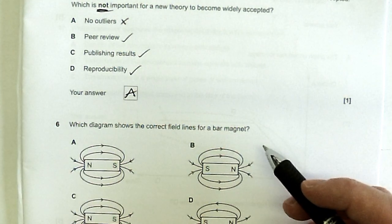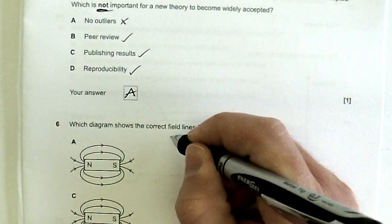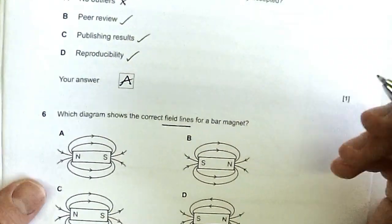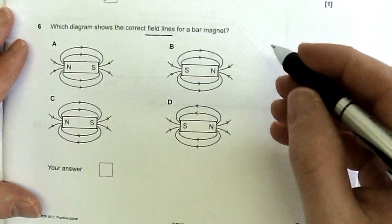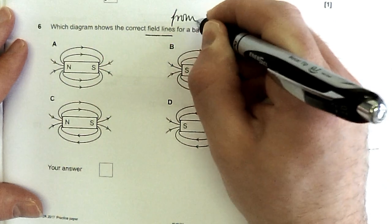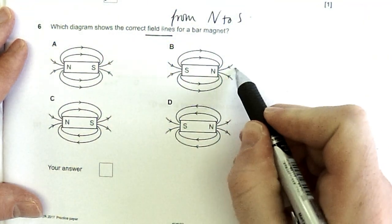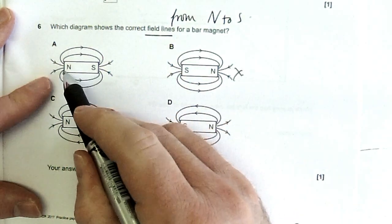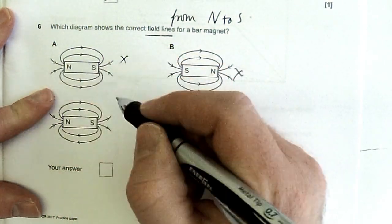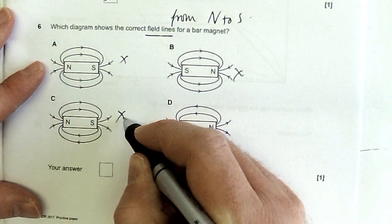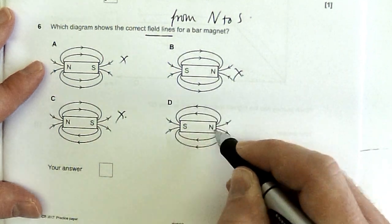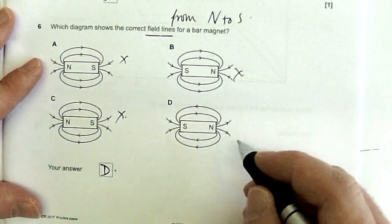Which diagram shows the correct field lines for a bar magnet? Well, they're all the right shape. What do we need to know about field lines here? Field lines have arrows on them that point from north to south. So which one has arrows that go from north to south? Not this one, going towards north. Not this one, they're going towards north. Not this one, they're going towards north. So this one from north, aha, to south. So this is our correct one here.